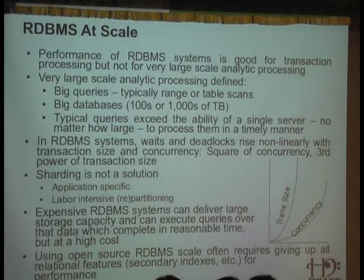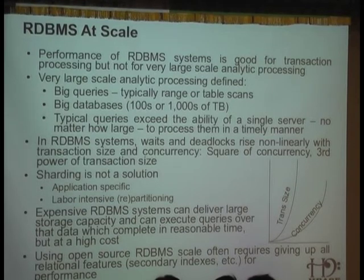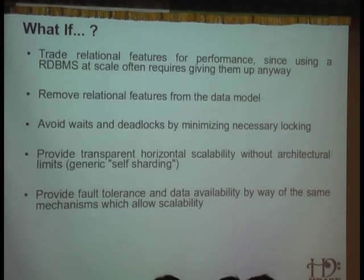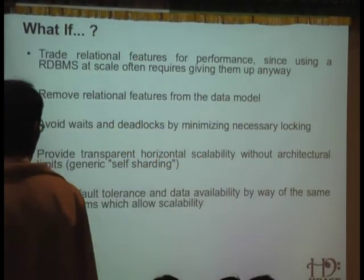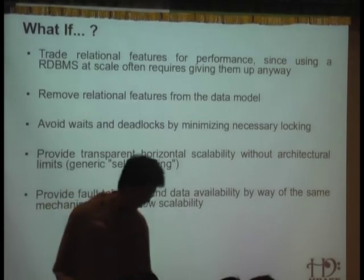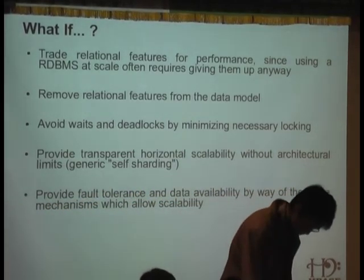When you use open source relational databases like MySQL or Postgres at scale for performance reasons, you often give up most relational features such as secondary indexes for performance. So what if we traded relational features for performance — we remove relational features from the data model, avoid waits and deadlocks by minimizing unnecessary locking, provide transparent horizontal scalability without architectural limits, provide fault tolerance and data availability by way of the same mechanisms, and also allow it to run on cheap commodity hardware.